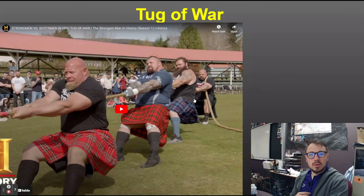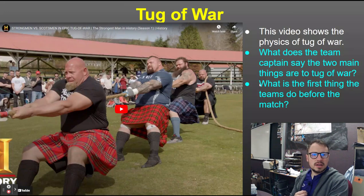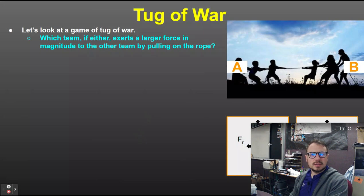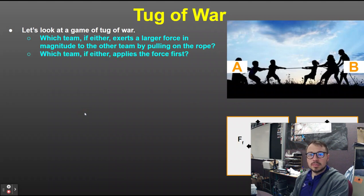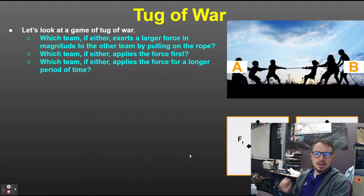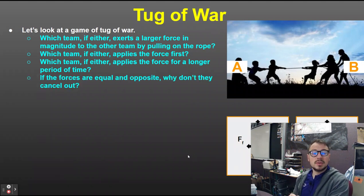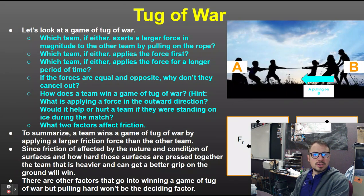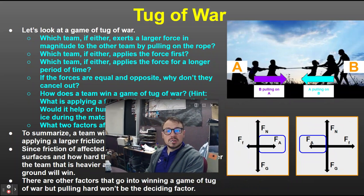What determines the winner of a game of tug of war? If team A and team B are playing, which team exerts a larger force pulling on the rope? We know they're applying the same force — equal and opposite. Which team applies that force first? Starts at the same time. Longer period of time? Ends at the same time. If they're equal and opposite, why don't they cancel out? They're acting on two different objects. A pulls on B, B pulls on A — the exact same force.